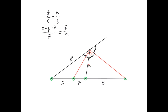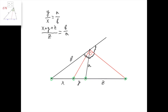Let's label this side of the triangle as A, this side as B, and let's label this segment X, this Y, and this here Z. From the angle bisector theorem, we have that Y divided by X equals A divided by B. And from the theorem about the external angle bisector, we have that X plus Y plus Z divided by Z equals B divided by A.